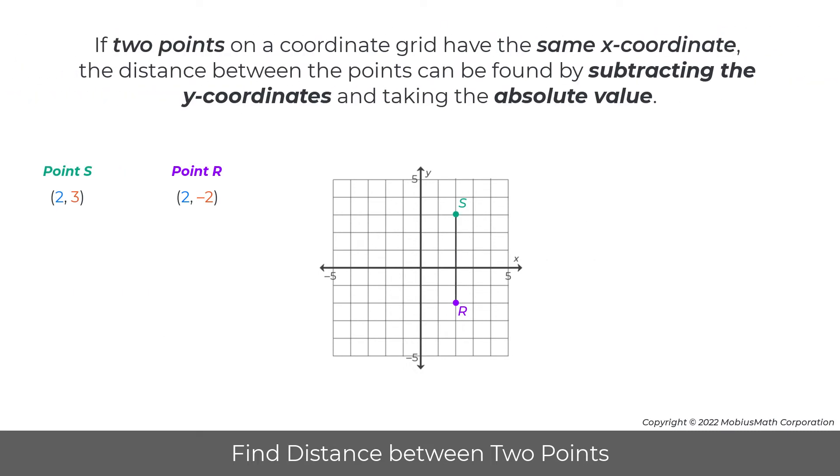If two points on a coordinate grid have the same x-coordinate, the distance between the points can be found by subtracting the y-coordinates and taking the absolute value.